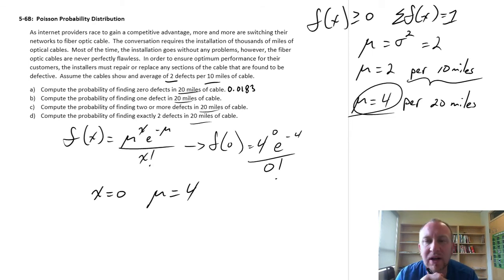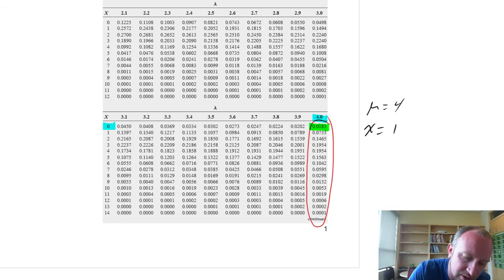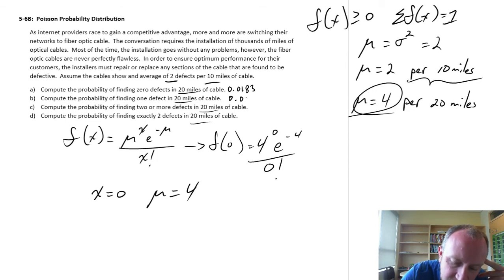Compute the probability of finding one defect over a 20 mile length of cable. So we go back to our distribution. Our distribution hasn't changed. We're still dealing with that distribution that has a mean of 4. But now our x value is equal to 1. So I'm still looking at just that one section, circled in red. Now I look for an x of 1, and I find that the relevant probability is 0.073. So I can come back to my problem. And here I have a value of 0.073.